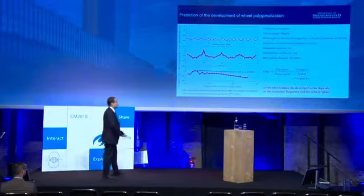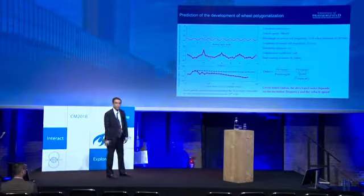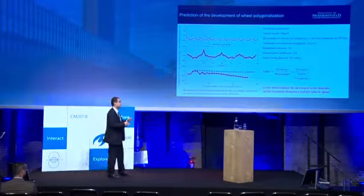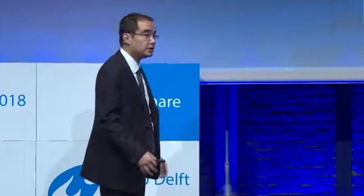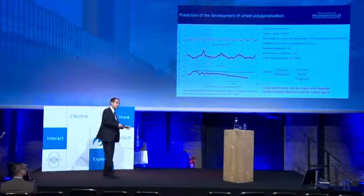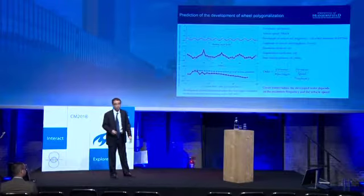Here is a simple example to illustrate the basic feature of the prediction program. The basic feature is that under a specific frequency excitation, the corresponding polygonization order will be developed. For example, with a vertical rail irregularity of wavelength equal to one-tenth of the wheel perimeter, the tenth order will be exactly developed. This basic feature can be extended to situations with multiple frequency components.